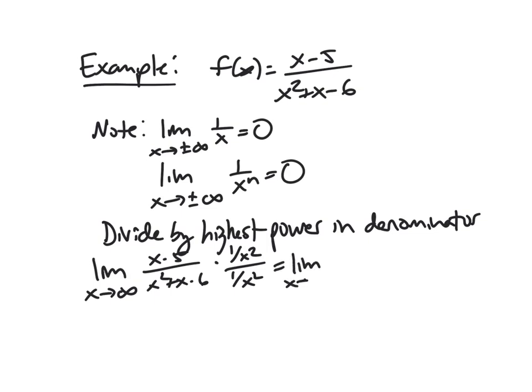And this becomes 1 over x minus 5 over x squared over 1 plus 1 over x minus 6 over x squared. And then the point of this guy here that's starred is this goes to 0, this goes to 0, this goes to 0, and this goes to 0.